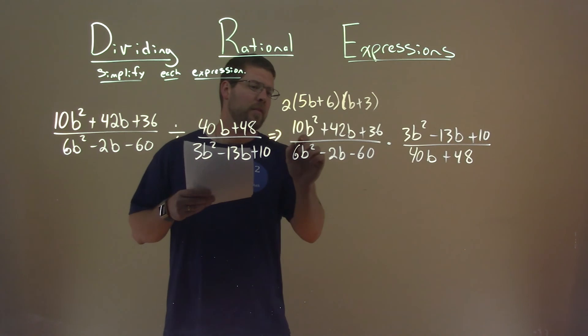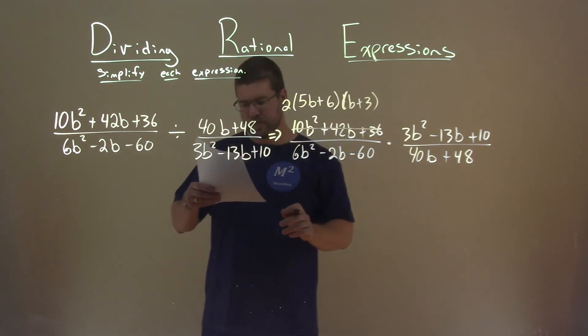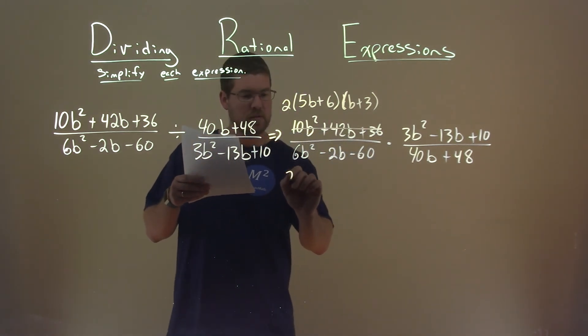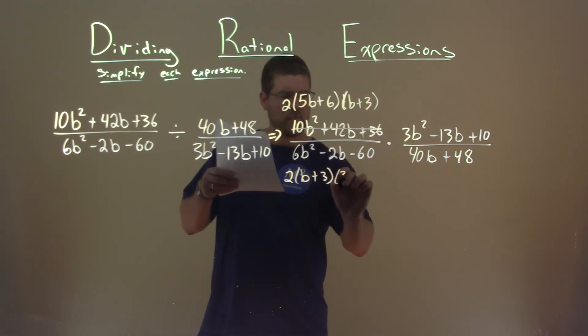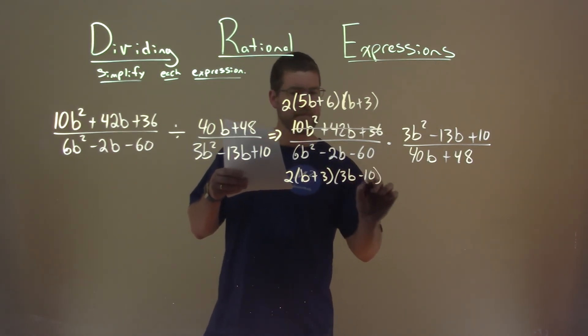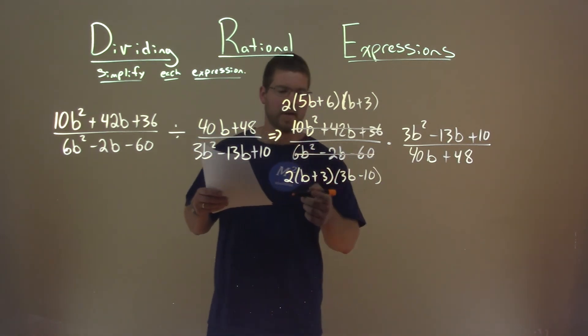I'm going to rewrite that in factor form. This denominator factors out to be 2 times b plus 3, times 3b minus 10. I'm going to cancel that out and write it in factor form.